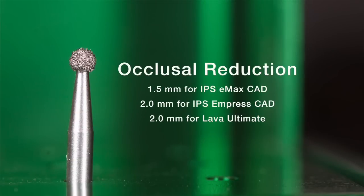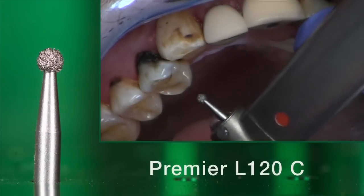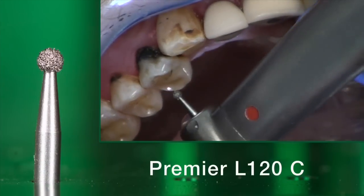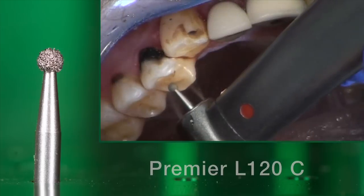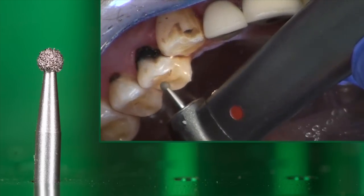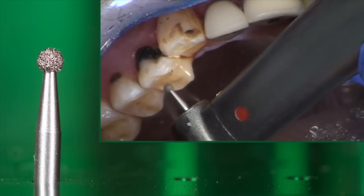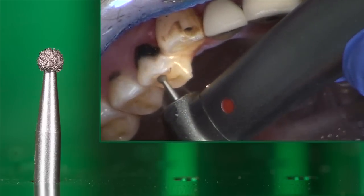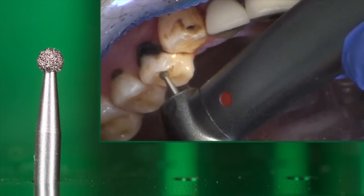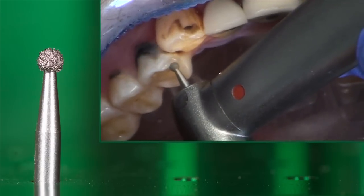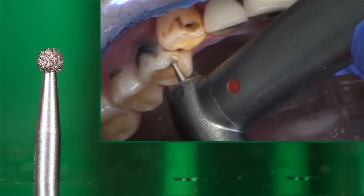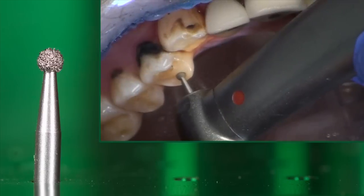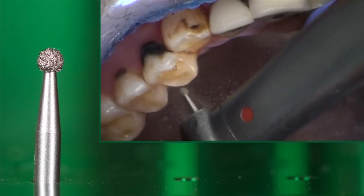The first thing I'm going to consider is the occlusal reduction required for this particular material. Because we're using Emacs CAD, we need about a millimeter and a half of occlusal reduction. In order to accomplish this accurately, I'm going to use a round burr — a Premier L120C. When I sink this burr down into the occlusal surface, I'm reducing the occlusal surface by about a millimeter and a half. By creating dots across the occlusal surface, I have a reduction guide that I can then connect using my secondary burr, which will be a round end tapered burr. The first step is simply to sink this burr down into the occlusal surface of the tooth.